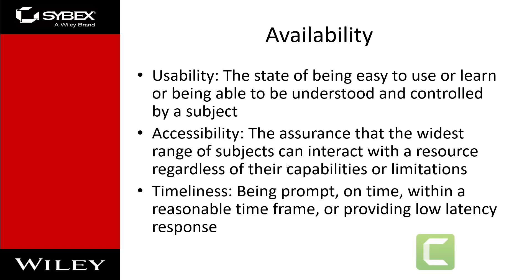Availability includes efficient uninterrupted access to objects and prevention of denial-of-service attacks. It also implies that the supporting infrastructure — including network services, communications, and access control mechanisms — is functional and allows authorized users to gain authorized access. For availability to be maintained on a system, controls must be in place to ensure authorized access and an acceptable level of performance, quickly handle interruptions, provide redundancies, maintain reliable backups, and prevent data loss or destruction.